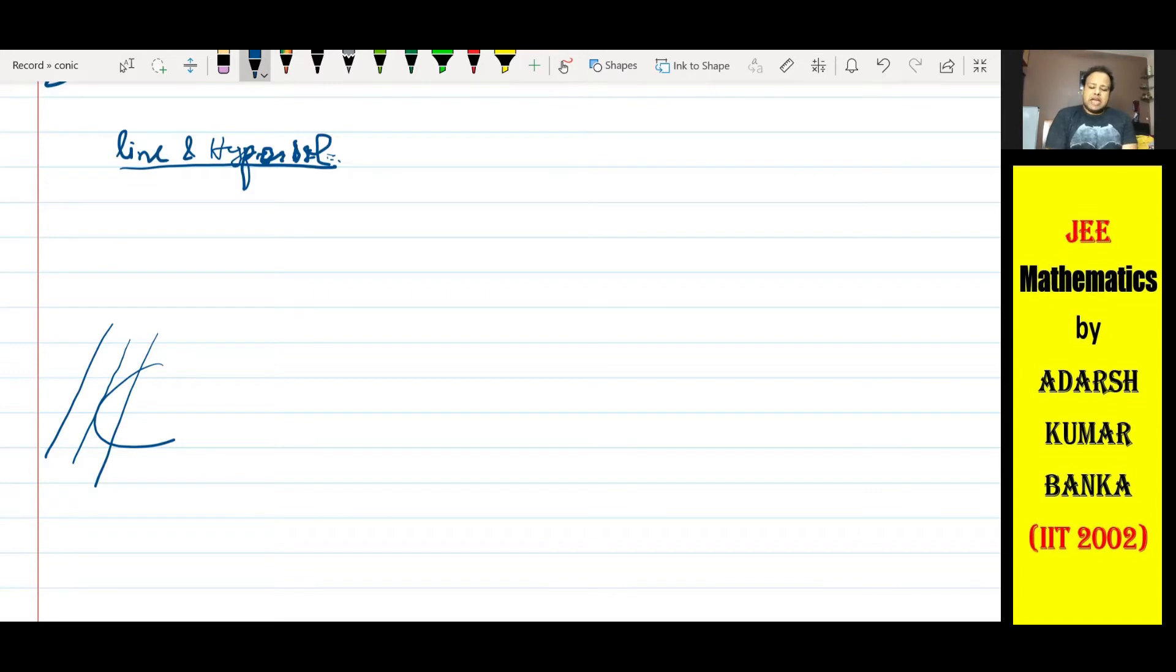Let's not waste more time. Aapne ellipse ka video uptake dekh liya hoga. You know ellipse. Ellipse mein kya milta tha condition - ki agar koi line touch karta hai, wo condition ellipse mein bhi kaam aata tha, hyperbola mein bhi kaam aata hai, parabola mein bhi kaam aata hai, circle mein bhi kaam aata hai. Jab line ko humne tangency ka condition lagaya tha, to humne tangent ka equation mila tha. Ellipse mein if you remember, y equals mx plus minus under root a square m square plus b square.